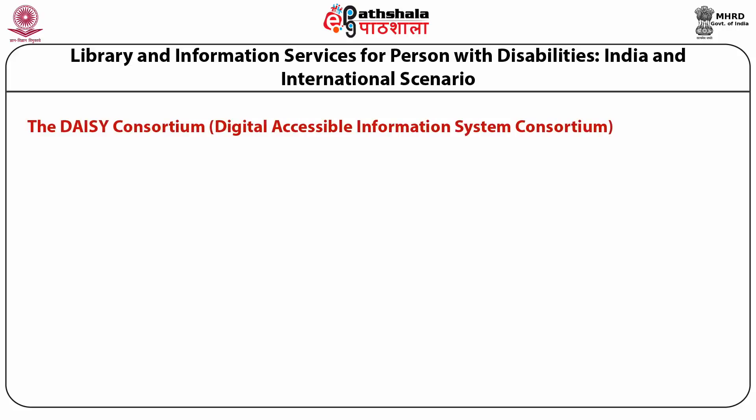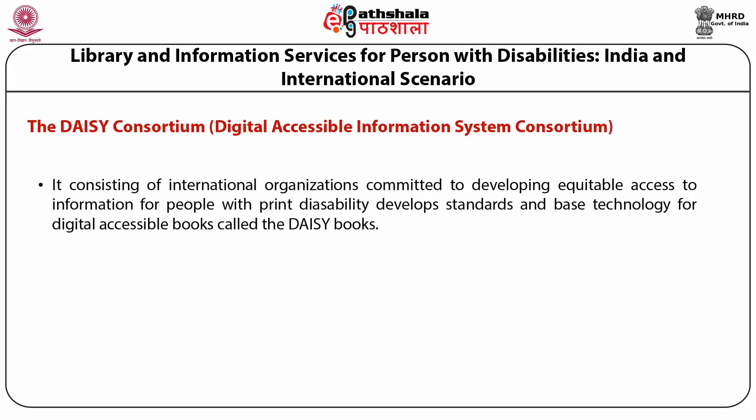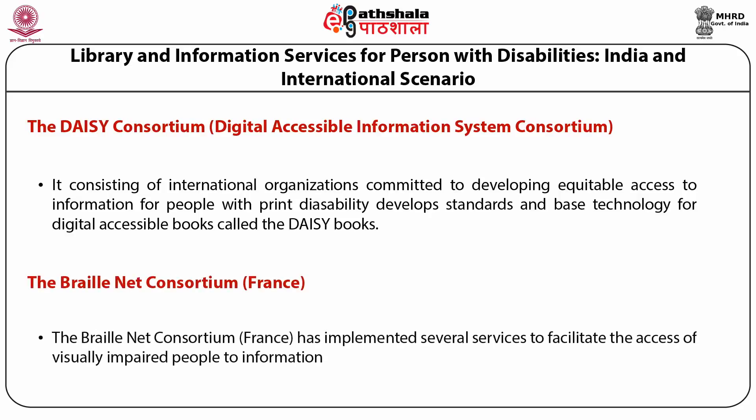Next is the DAISY Consortium — Digital Accessible Information System Consortium — consisting of international organizations committed to developing equitable access to information for people with print disability, developing standards and best technology for digital accessible books called DAISY books. Next is the BrailleNet Consortium France, which has implemented several services to facilitate access of visually impaired people to information.